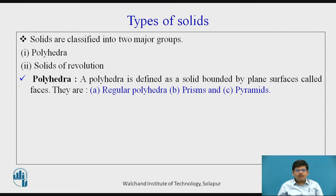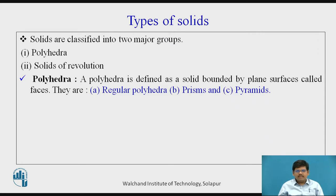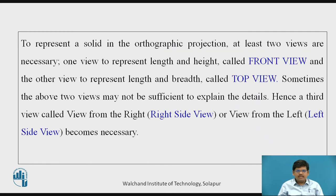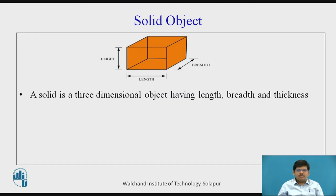A polyhedra is defined as the solid bounded by plane surfaces, called faces. In that, we have regular polyhedra and prisms and pyramids. The first object you saw in the previous slide was a polyhedra because it has plane surfaces — no curved surfaces available.